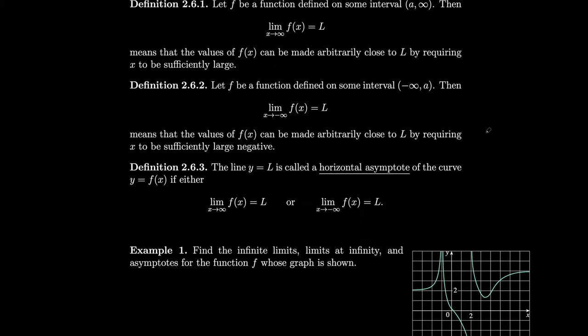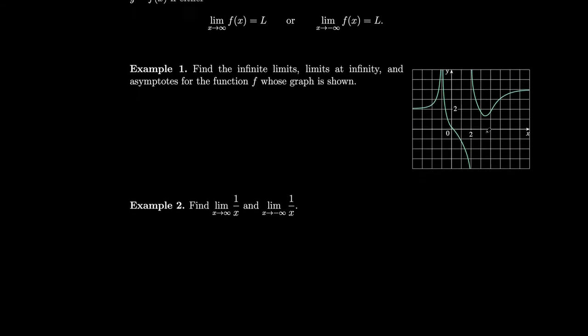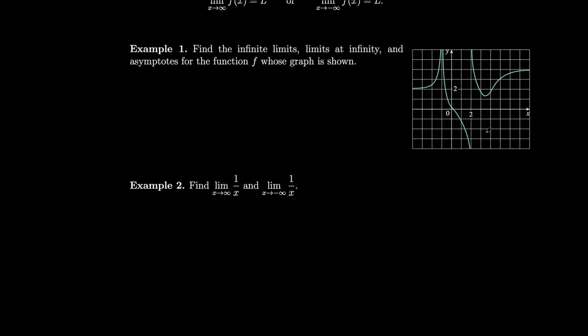Let's do an example. We'll find the infinite limits, limits at infinity, and asymptotes for the function f whose graph is shown. It looks like as we go to minus one, this thing gets really, really big. So that implies the limit as x goes to minus one is infinity. That's an infinite limit.